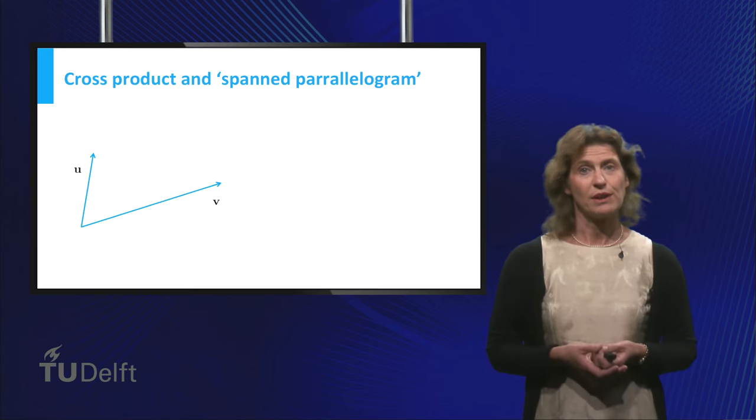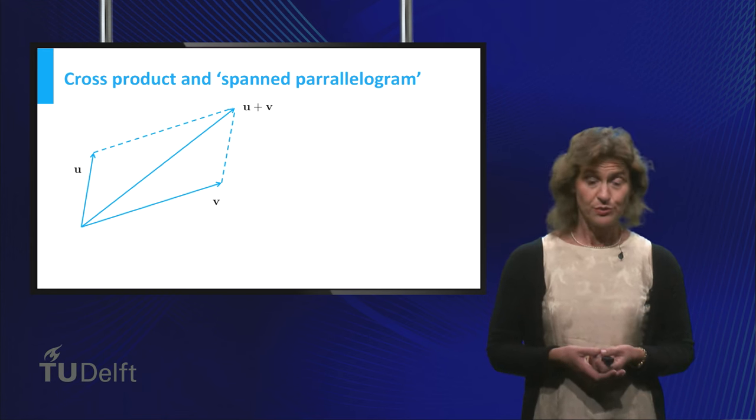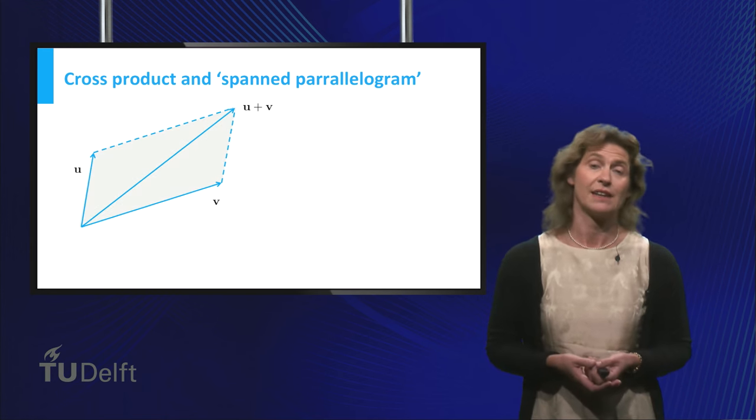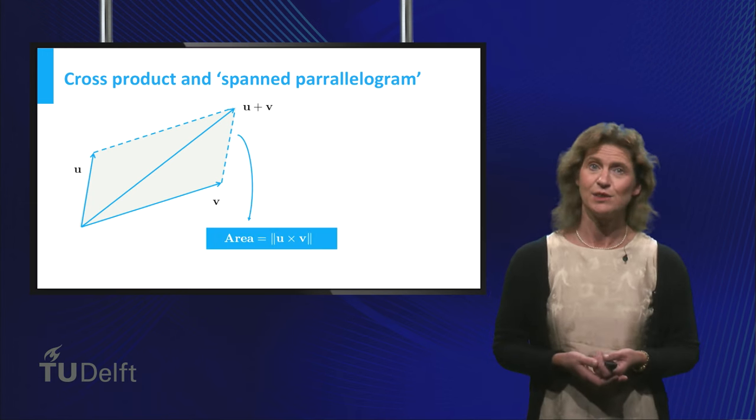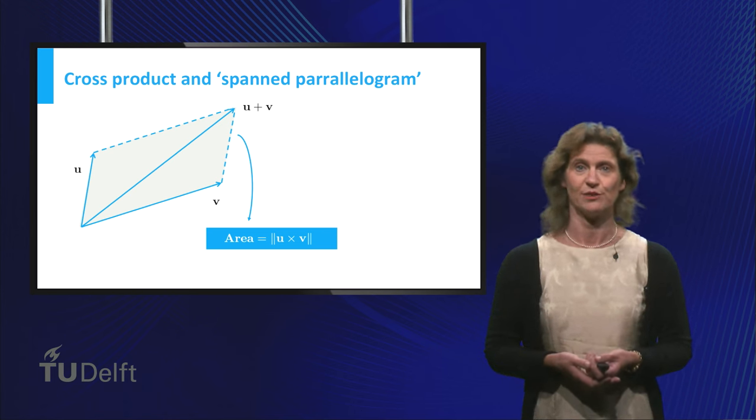Then you can define the parallelogram spanned by u and v. This parallelogram then has an area. And guess what? This area is equal to the length of the cross product of u and v.